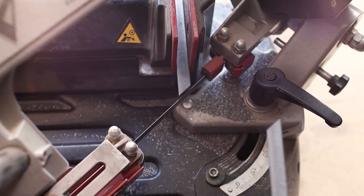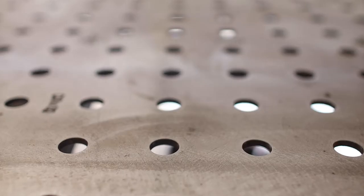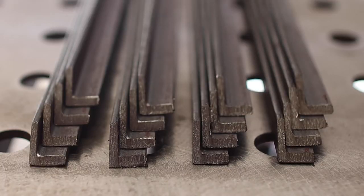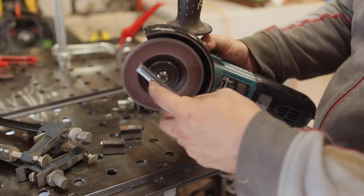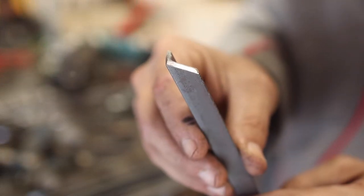I started by cutting the pieces for the rectangular shelves and I went with 45 degree miters for these. Once those were cut I used the flap disc to clean up the ends and give them a little bevel so I get good penetration with the welds.